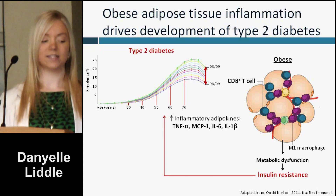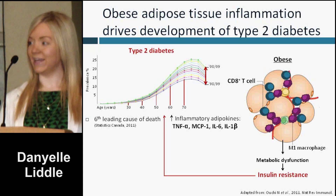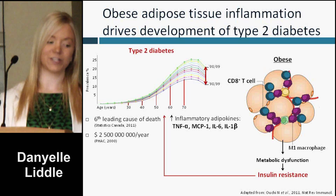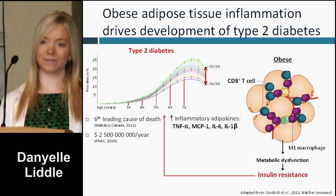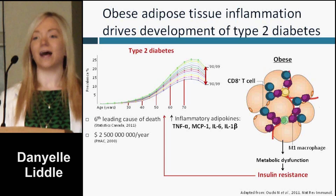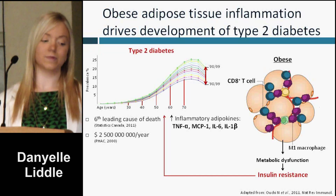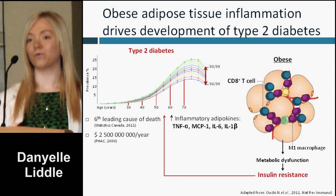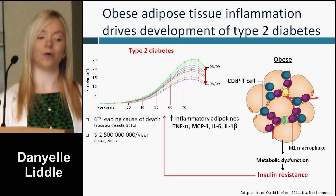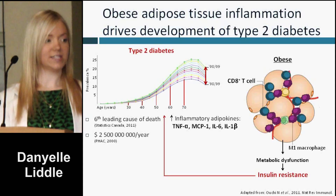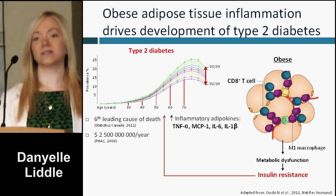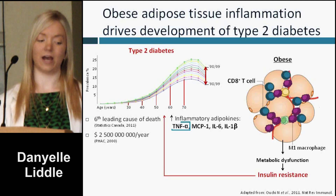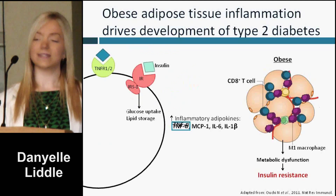Those immune cells and adipocytes within adipose tissue also secrete protein signaling molecules called adipokines, and they use these to communicate with each other. But this, too, becomes dysregulated in obesity, such that obese adipose tissue is characterized by increased secretion of inflammatory adipokines. I'll focus today on tumor necrosis factor alpha, monocyte chemoattractant protein 1, and interleukins 6 and 1 beta.